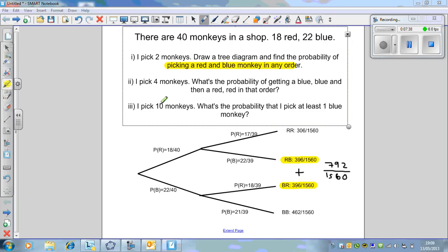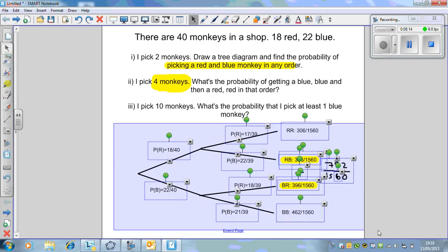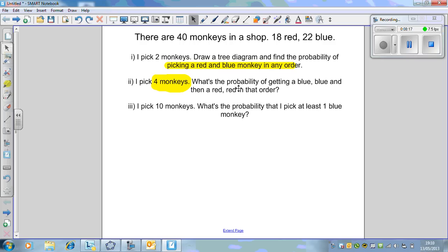The next question is where we're picking four monkeys. What's the probability of picking a blue, blue, then red, red in that order? With the probability tree diagram, this becomes a right old mission now because we've got to go to the third monkey, then the fourth monkey on every single branch. We're going to be here till kingdom come.